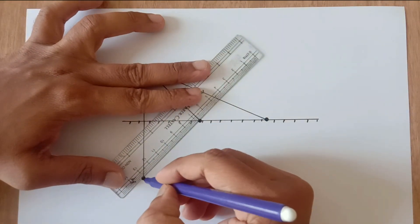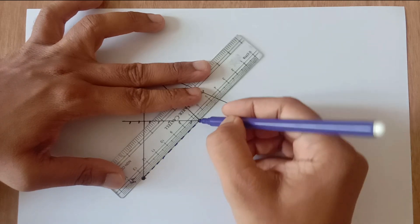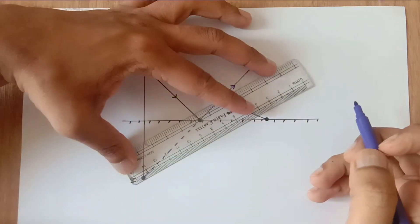Join both the point of incidence with the image by the dotted line and extend it forward. That becomes your reflected ray.